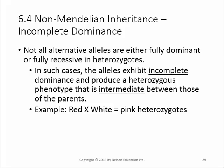Here's another one: incomplete dominance. This is when the alleles' dominance isn't a complete dominance and the phenotype is intermediate. For instance, there are certain flowers where red and white are incompletely dominant. Unlike peas, where purple and white are completely dominant and recessive, things like roses — red and white, if they mix — the heterozygous individuals' phenotype will be pink. Snapdragons fall into this category; that's why we have so many colors of snapdragons.